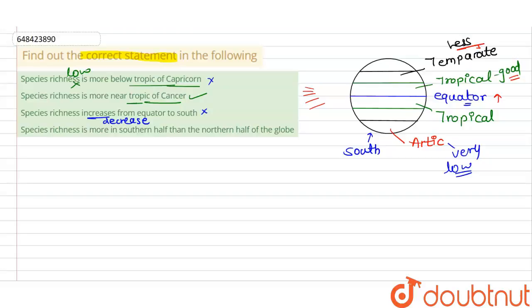Option four says species richness is more in the southern half than in the northern half of the globe. This is not correct — whether you move north or south from the equator, species richness decreases equally. It is not higher in the south and lower in the north. So this statement is also wrong.